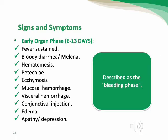The second phase is the early organ phase, days 6–13. Patients present with sustained fever, bloody diarrhea or melena, hematemesis, petechiae, ecchymosis, mucosal hemorrhage, pharyngeal hemorrhage, conjunctival injection, edema, apathy, and depression — described as the 'bleeding phase.' Patients do not die from the virus itself, but from a cytokine storm — an explosion of immune responses that damages blood vessels, causing both internal and external bleeding.